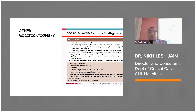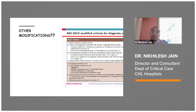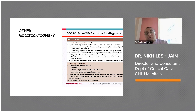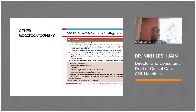As far as imaging criteria are concerned, echocardiogram positive for infective endocarditis includes vegetation, abscess, pseudo-aneurysm, intracardiac fistula, valvular perforation or aneurysm, and new partial dehiscence. You can also find abnormal activity around the site of prosthetic valve implantation detected by PET-CT — only if the prosthesis was implanted for more than three months — or radiolabeled leukocytes using SPECT or CT. Definitive paravalvular lesions on cardiac CT are also among the emerging positive criteria for diagnosis of infective endocarditis.